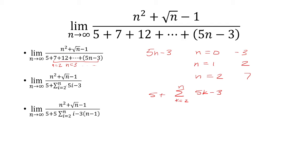Now I can break this up. The sum is linear, meaning I can factor out the 5 here. So this 5 comes out and then I have the sum from i equals 2 to n of i minus 3. And then here I'm subtracting the 3, n minus 1 times.